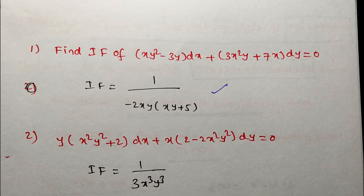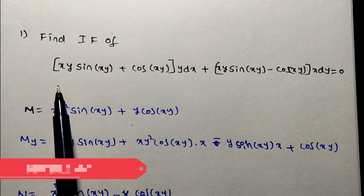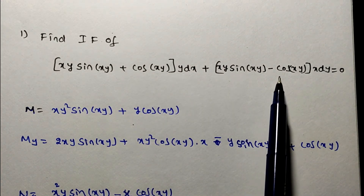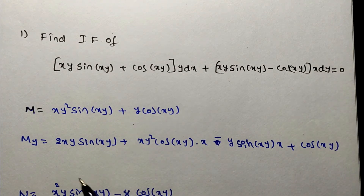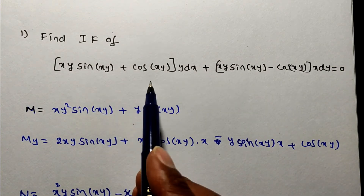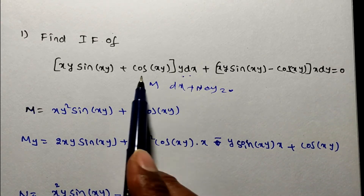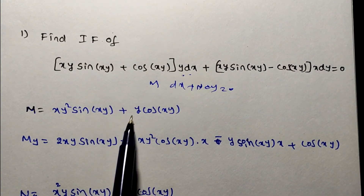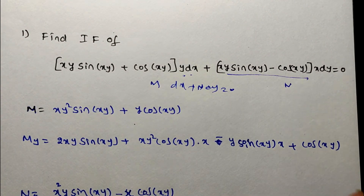Now I will solve the first problem. Given: find the integrating factor of [xy·sin(xy) + cos(xy)]·y dx + [xy·sin(xy) - cos(xy)]·x dy = 0. This is in the form M dx + N dy = 0. So M is the dx coefficient and N is the dy coefficient.